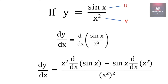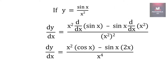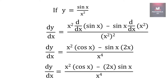So it will be x square into the derivative of sin(x), minus sin(x) into the derivative of x square, all upon x square squared. The derivative of sin(x) is cos(x), the derivative of x square is 2x, and the square of x square in the denominator becomes x to the power 4. We can simplify this answer as x square times cos(x) minus 2x sin(x), upon x to the power 4.